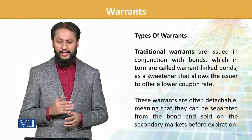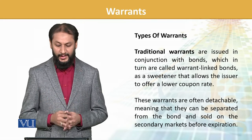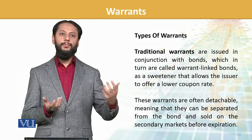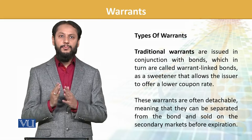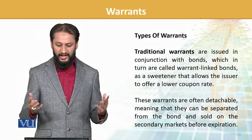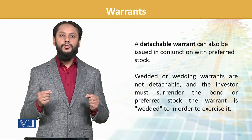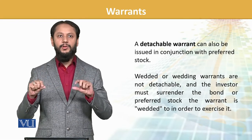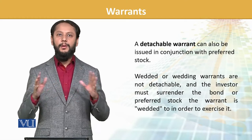Types of warrants: first, traditional warrants, which are issued in conjunction with bonds — you can call them warrant-linked bonds. They are basically a sweetener to make bonds attractive — you buy a bond and along with it you are also given a warrant to buy shares after some time. These warrants are detachable, meaning they can be traded separately from the bond. This is similar to savings certificates which have detachable coupons — you take the coupon and receive your payment. Detachable means they can be separated from the main instrument.